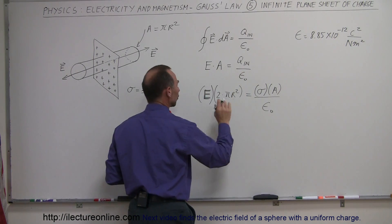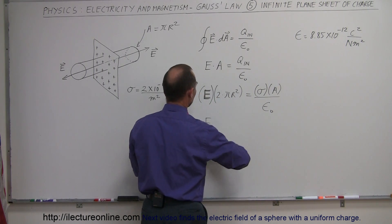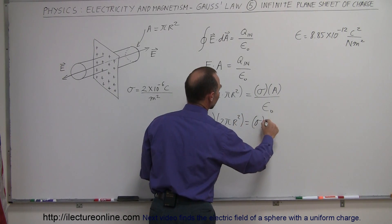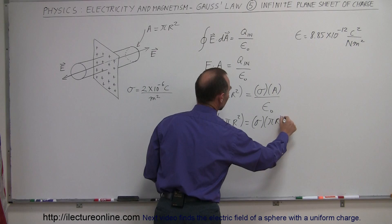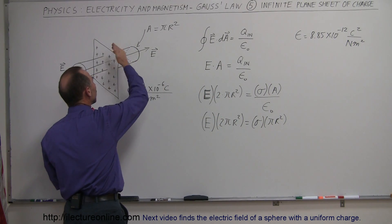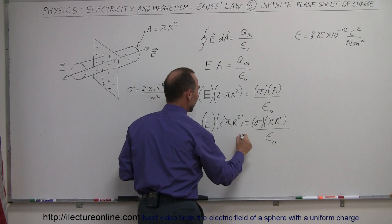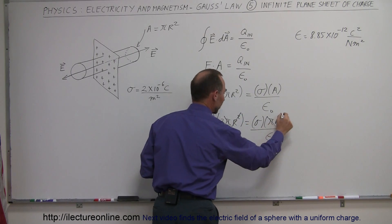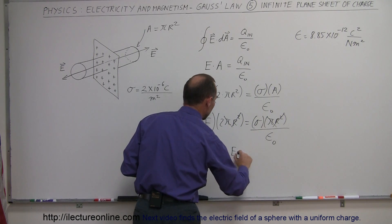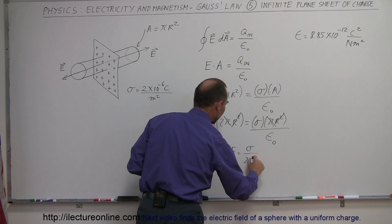So we have E times 2 pi r squared equals sigma times pi r squared divided by epsilon sub nought, where sigma is the charge density on each side of the surface. The pi cancels with pi, and r squared cancels with r squared, leaving 2 times E equals sigma over epsilon sub nought. Therefore E equals sigma divided by 2 times epsilon sub nought.